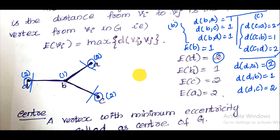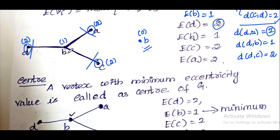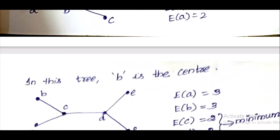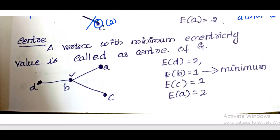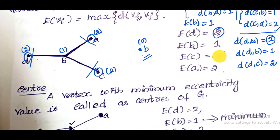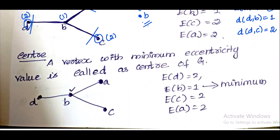For the next vertex B, the distance from B to itself is 0, and distance of 1 to the same vertex. A vertex here lies in a way — this is the center of the vertex. So I will take a graph here. The definition: a vertex with minimum eccentricity is called the center of the graph.